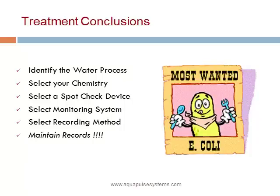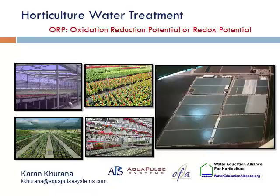To summarize: identify your water process, select your chemistry, select the validation test device or test meter, select your continuous inline monitoring system, and maintain records at all times. This concludes our lesson on ORP, or Oxidation Reduction Potential. If you have any questions, please contact the Water Education Alliance, or you may contact me, Karan Khurana, at kkhurana@aquapulsesystems.com.